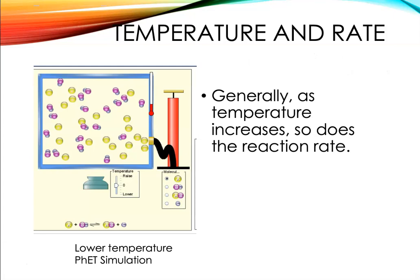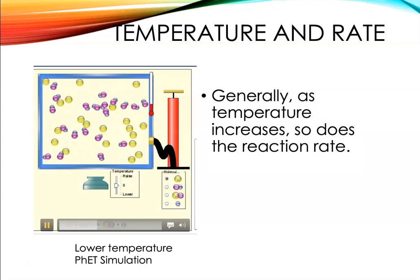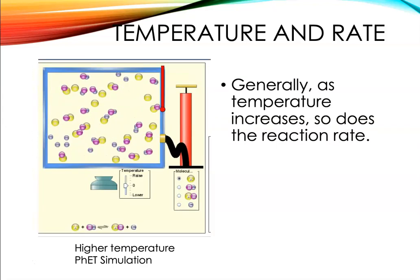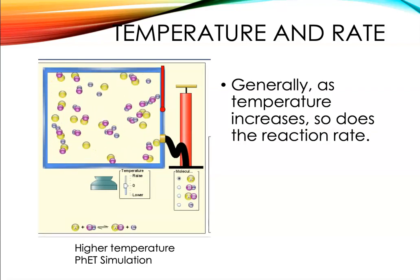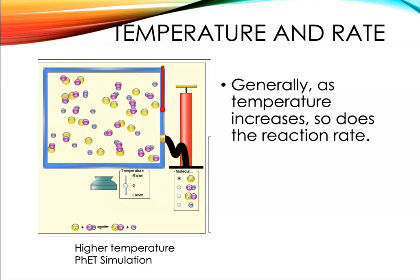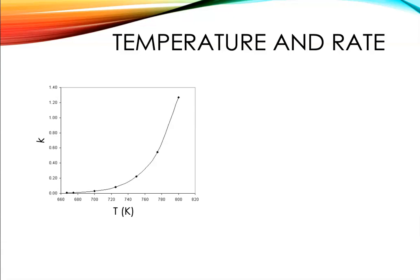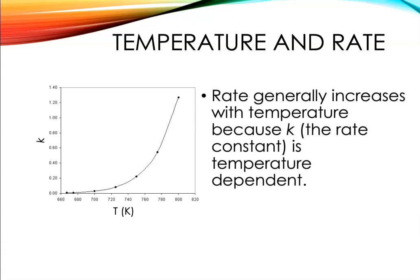I wanted to explore the relationship between temperature and rate a little more. When we increase the temperature, the reaction rate increases. This screen capture from the PhET simulation shows molecules moving sluggishly at lower temperature, producing fewer collisions and fewer products. At higher temperature, there are a lot more collisions and more products. The rate constant from your rate laws is temperature dependent — it's not a linear dependence — and it changes dramatically with temperature, leading to that increase in reaction rate.